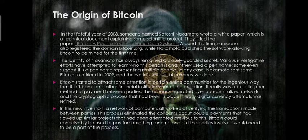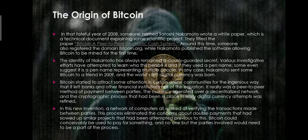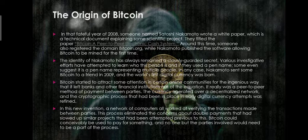The Origin of Bitcoin. In that fateful year of 2008, someone named Satoshi Nakamoto wrote a white paper — a technical document explanation of a scientific project — titled to build an electronic cash system. Around this time, someone also registered the domain Bitcoin.org, while Nakamoto published the software allowing Bitcoin to be mined for the first time. The entity of Nakamoto has always remained a closely guarded secret.